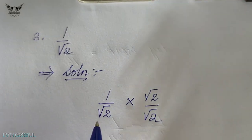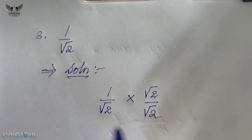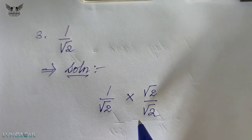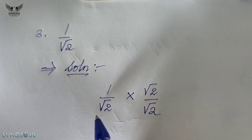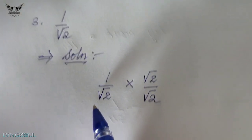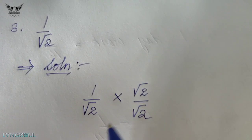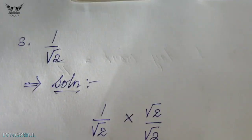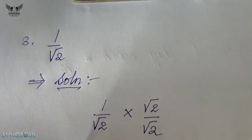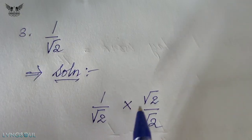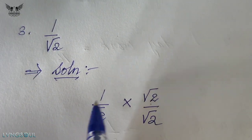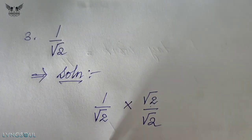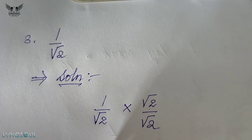Once we rationalize the denominator, we multiply both the numerator and denominator by root 2. So one by root 2, multiplied by root 2 over root 2, gives us root 2 over 2. The denominator root 2 times root 2 equals 2, which is rational.